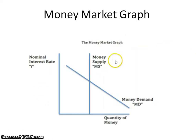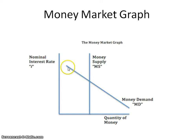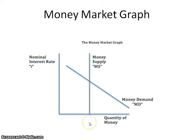The money market graph is really important for AP Macro. On the horizontal axis you have the quantity of money. On the vertical axis you have the nominal interest rate, which is labeled with a lowercase i. You have a downward sloping money demand curve, and you have a vertical money supply curve.